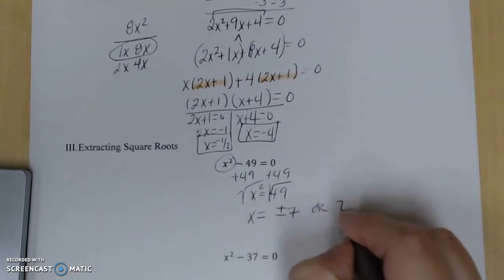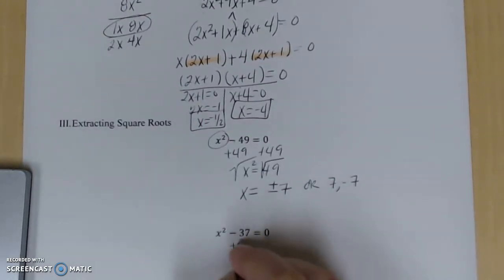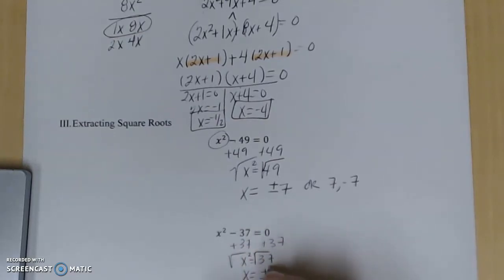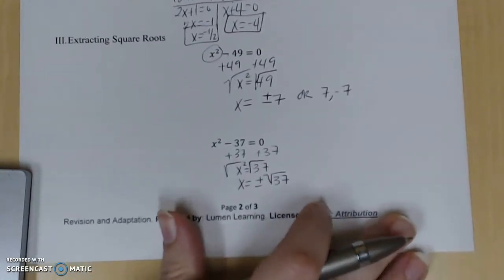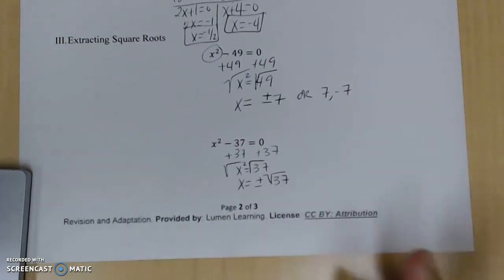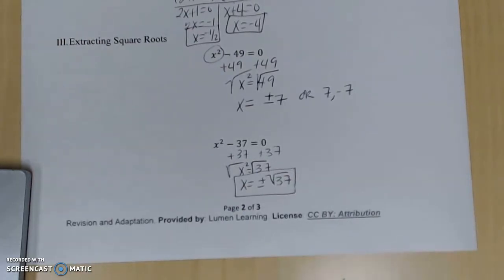Or we could write this as 7 and negative 7, just depending on how the computer would like you to enter that answer. Most of them do not have a plus or minus sign, so if I'm working it out by hand, I'm just going to say plus or minus. But if I'm entering all my answers, I might just say 7, negative 7. Looking at the next one, I'm going to do the same thing. So I'm going to add the 37 over to the other side. I get x squared equal to 37 and then square root. So I get x equal to plus or minus the square root of 37. You go to your handy-dandy calculator, and it tells you square root of 37 is some kind of decimal. And 37, I can't even break down into factors. So for this reason, this would be my answer, just plus or minus 37.